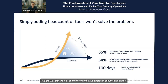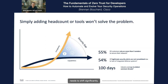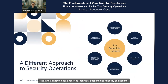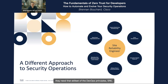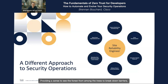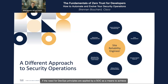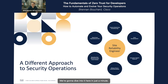The way we approach security challenges needs to shift significantly. We should really be looking at adopting site reliability engineering. For the SOC to be as effective as possible, it needs the skill set of DevOps principles and SRE. We need to change the way we look at how our teams operate — site reliability engineering is a critical component, providing a means to see the forest from among the trees, break down barriers, drive collaboration, and drive incremental efficiencies. If the need for DevOps principles applied by a SOC to achieve zero trust isn't already clear, sit tight — we're going to dive into it here in just a minute.